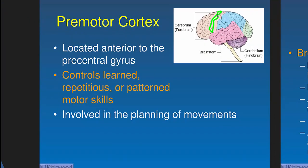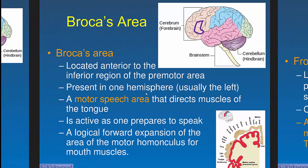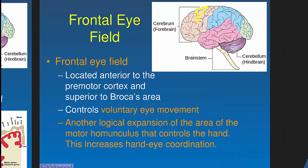The premotor cortex is right in front of the primary motor cortex and handles pattern motor skills — coordinating multiple muscles to work together, like forming a fist. Broca's area is a specialized premotor area for motor speech, directing the muscles of the tongue, lips, and throat for speech. The frontal eye field coordinates the extraocular muscles. It's situated near the hand area of the cortex, which makes sense — coordinating eyes and hands together.